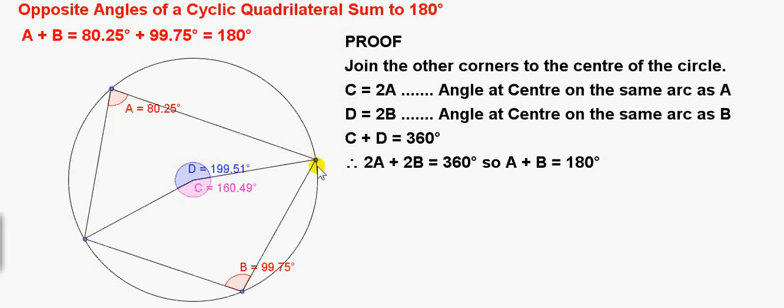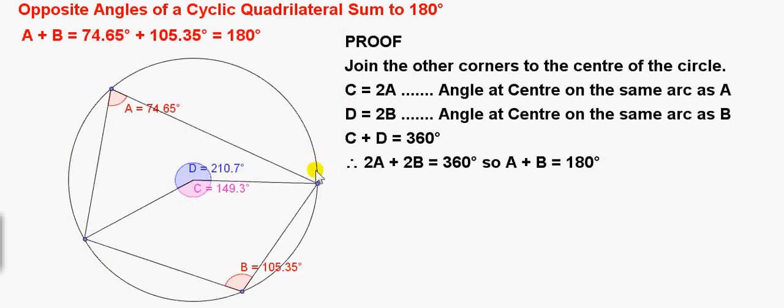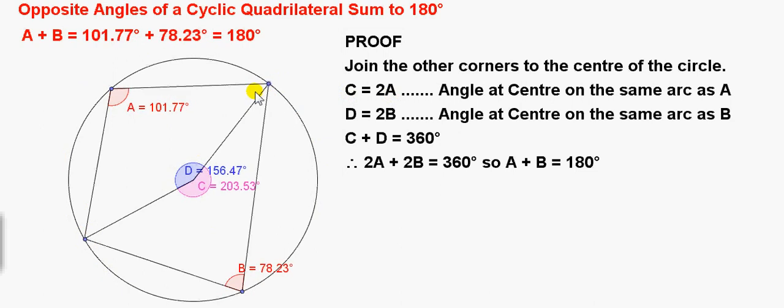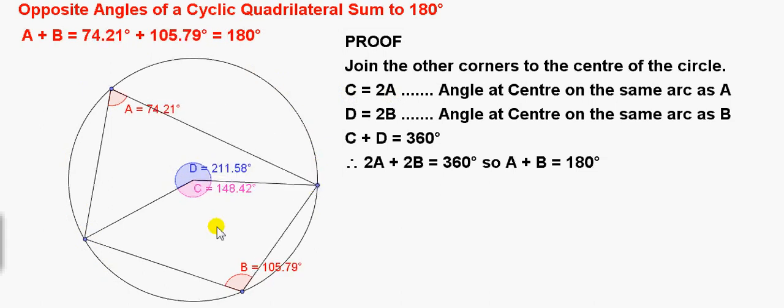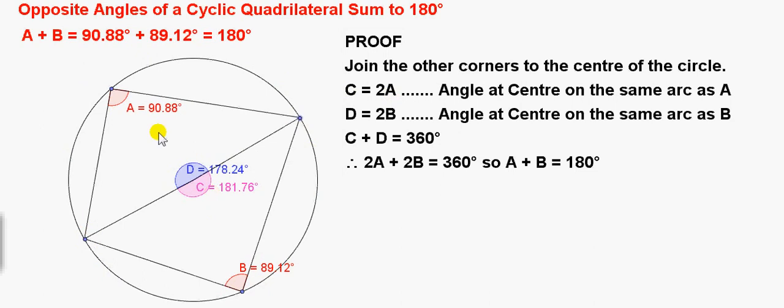And, of course, we can move these around. We could make D less than 180 degrees. It can either be less than 180 degrees or more than 180 degrees. It doesn't matter. D is always twice B. And C is always twice A.